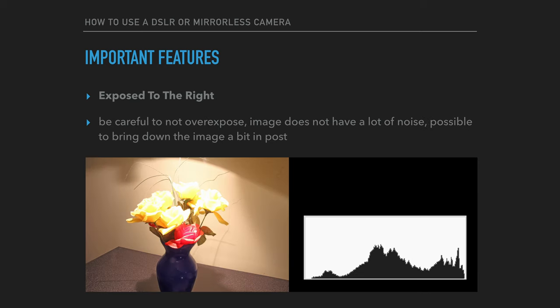Another interesting exposure is exposing to the right. When exposing to the right, be careful not to overexpose. This type of exposure will produce an image that does not have a lot of noise. Though it may seem bright while recording, it is likely possible to bring the image down a little bit in post.